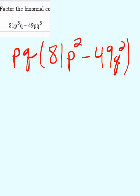81 and 49 are both squares, as is p squared and q squared. So that is a difference of squares. So we can continue.